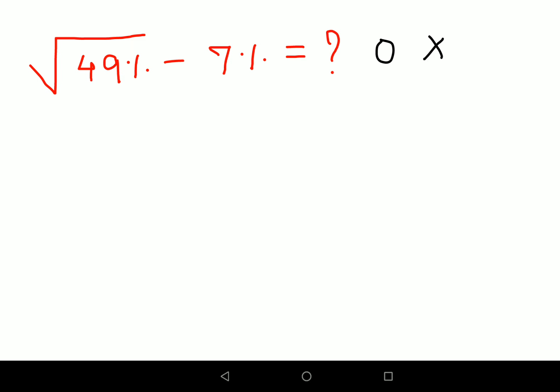See, root 49% can be written as what? That's right. Any percent can be written as a fraction, as nothing but A upon 100. So this will be written as 49 upon 100 minus 7 upon 100.